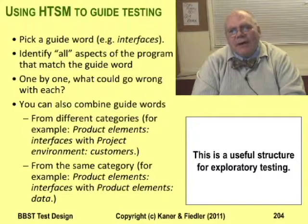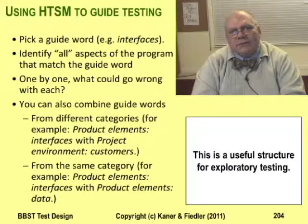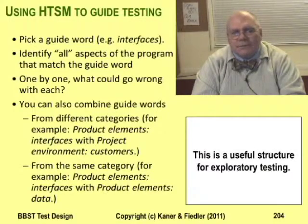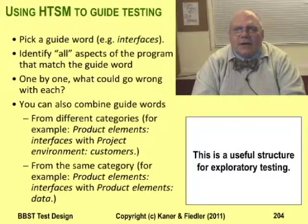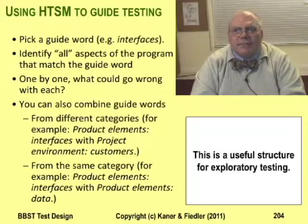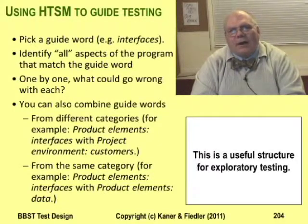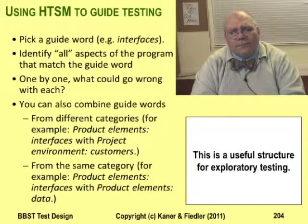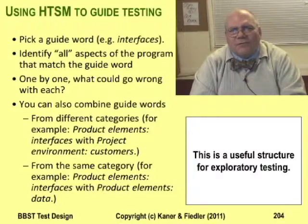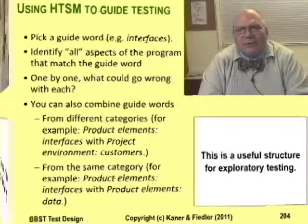Bach's use of guide words was inspired by HAZOPs, but he uses them a bit differently. It starts with his lists being a little more complex than you find in the typical set of HAZOP guide words. He can do that because his lists aren't designed for applying every guide word to every component. For example, consider performance — meaning product speed. You can't actually test every product element for performance. You might test every feature for performance, but try testing the manual for performance. The concept just doesn't apply.